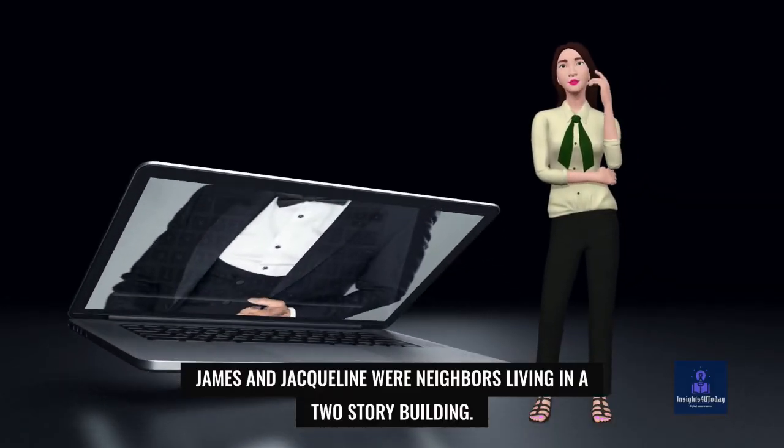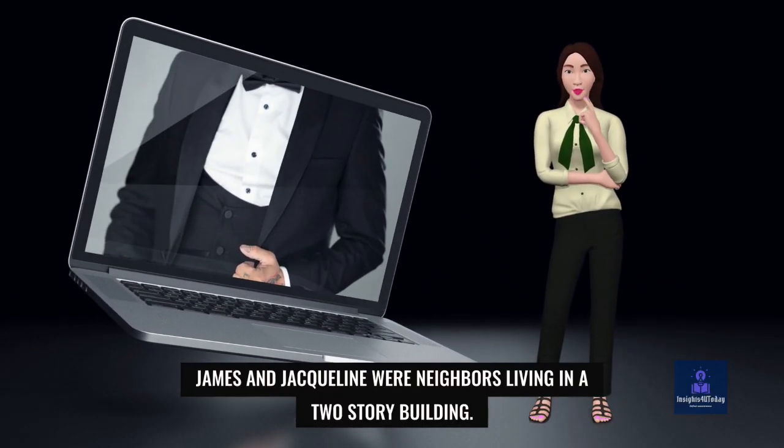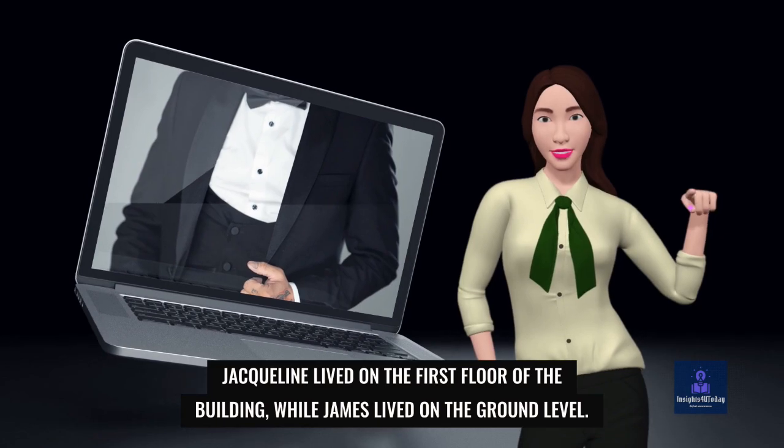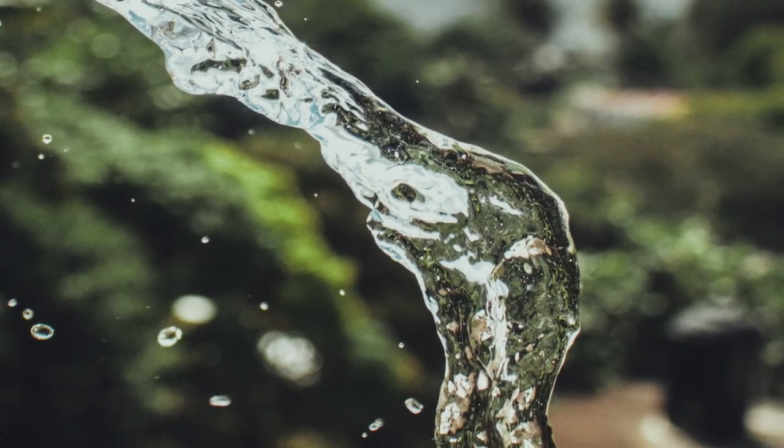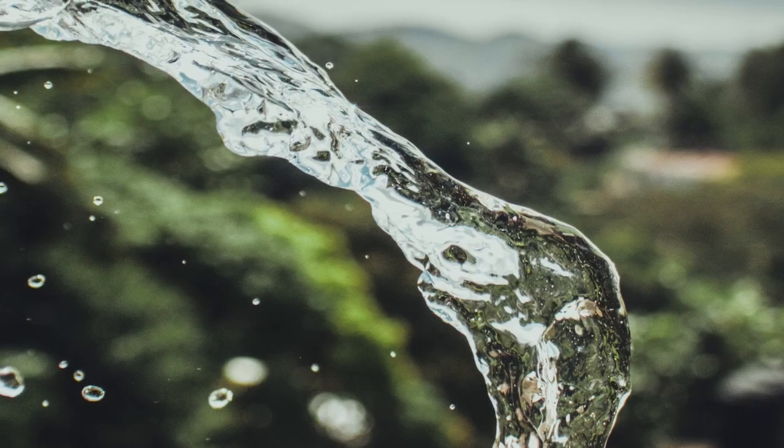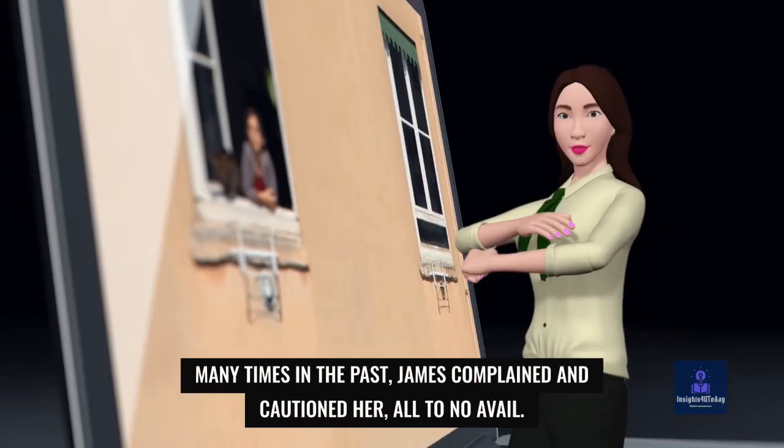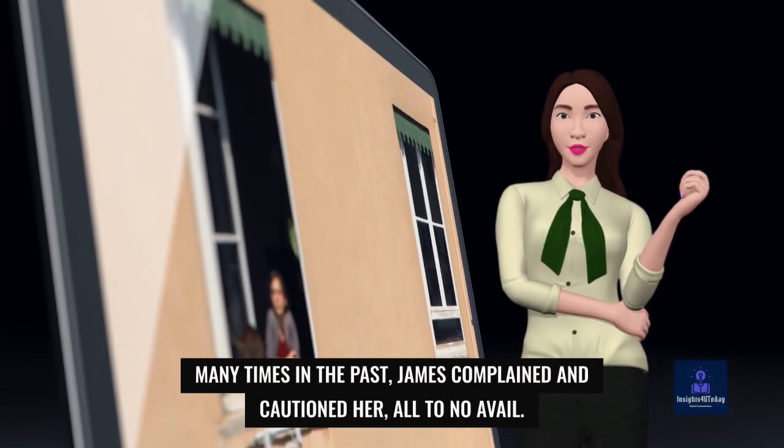James and Jacqueline were neighbors living in a two-story building. Jacqueline lived on the first floor of the building, while James lived on the ground level. Jacqueline had a habit of throwing water from the first floor to the ground. Many times in the past, James complained and cautioned her, all to no avail.